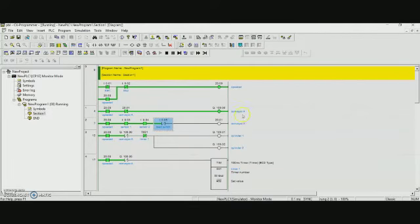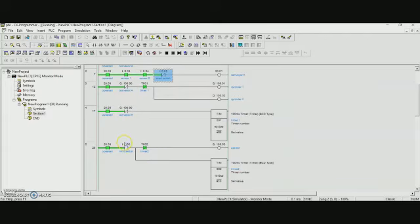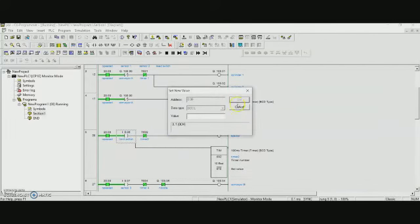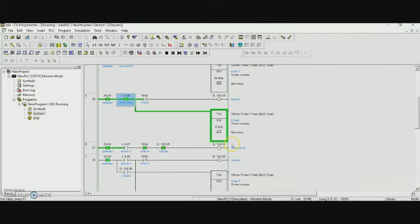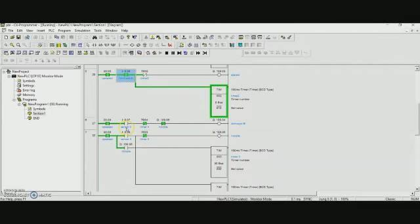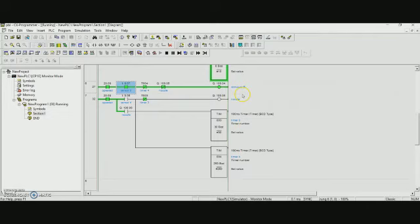Then conveyor A will start turning. When limit switch is on, the ejector will operate one second to push the object to the conveyor B. When sensor 3 detects the object, conveyor B will start turning. And in the middle of conveyor B there is a squeeze cream station where the object will stop once sensor 4 detects the object.